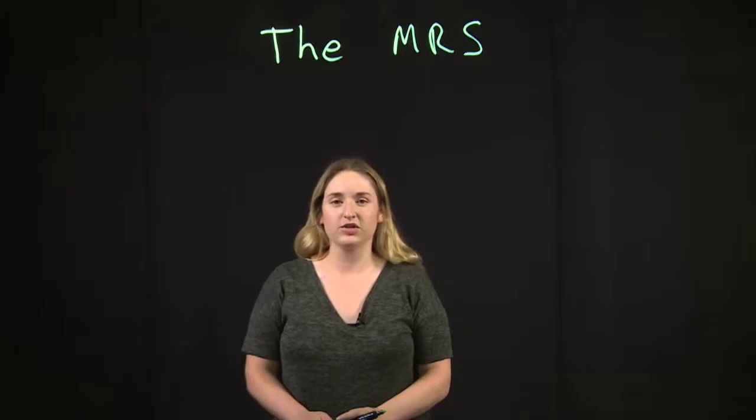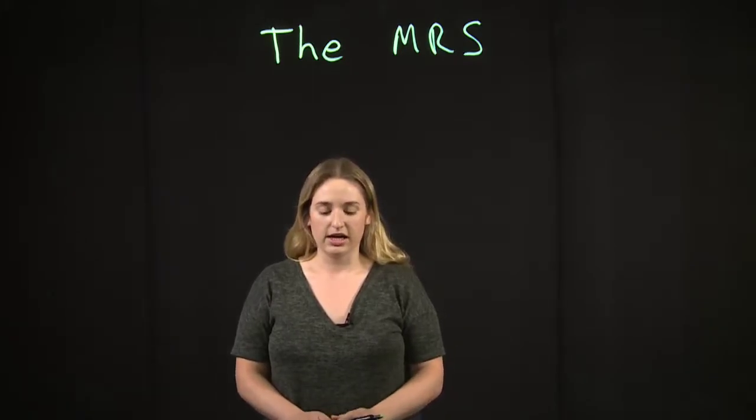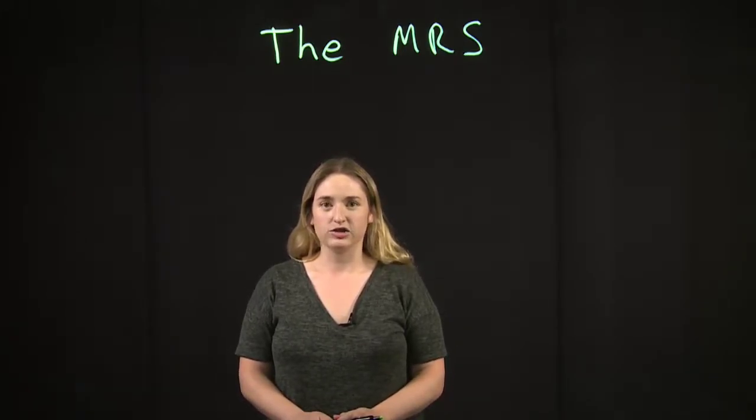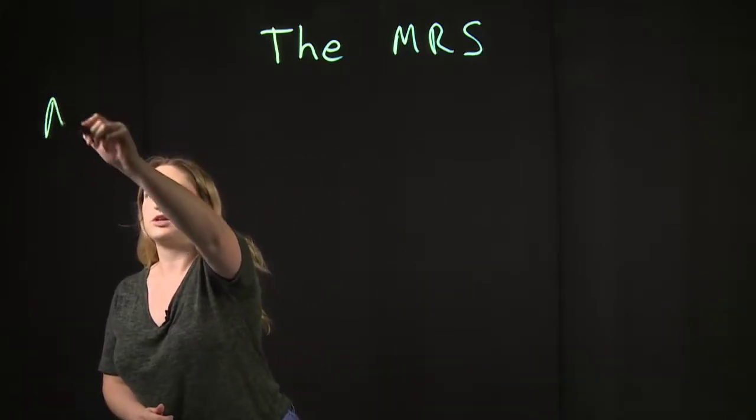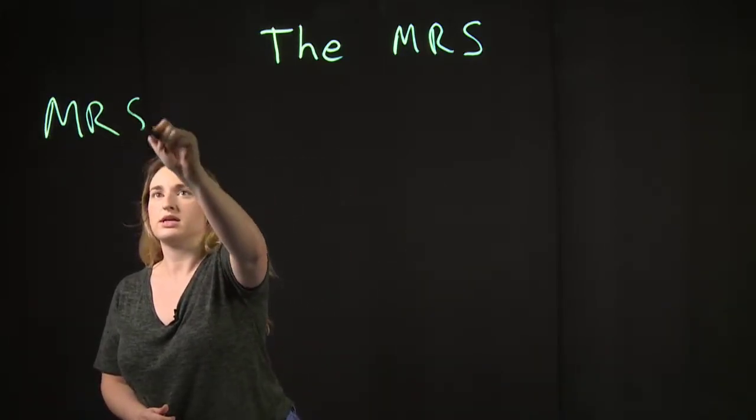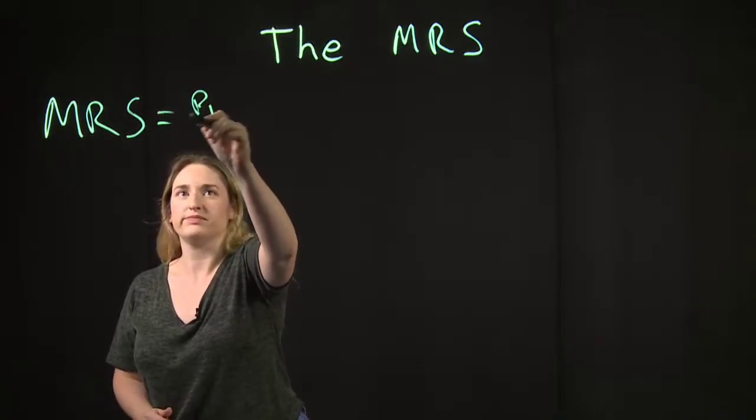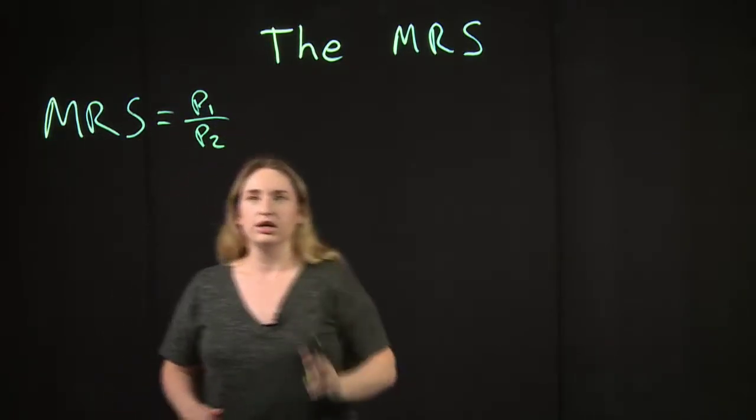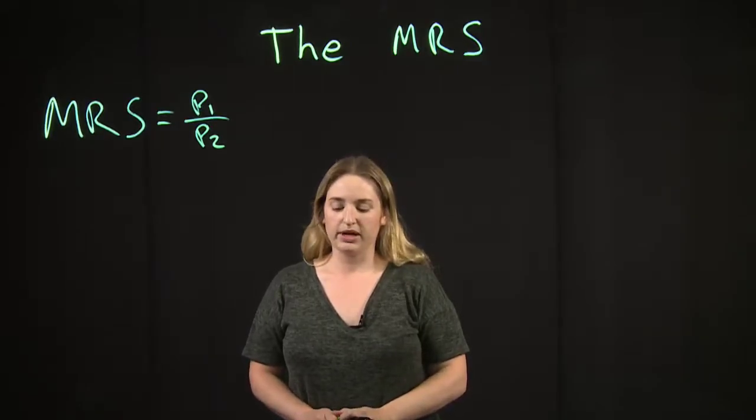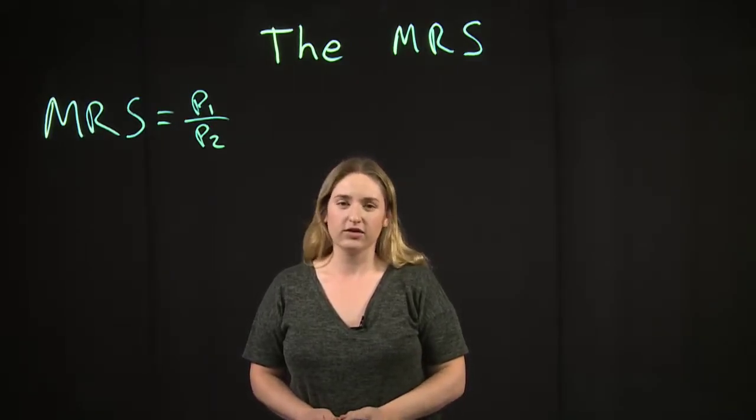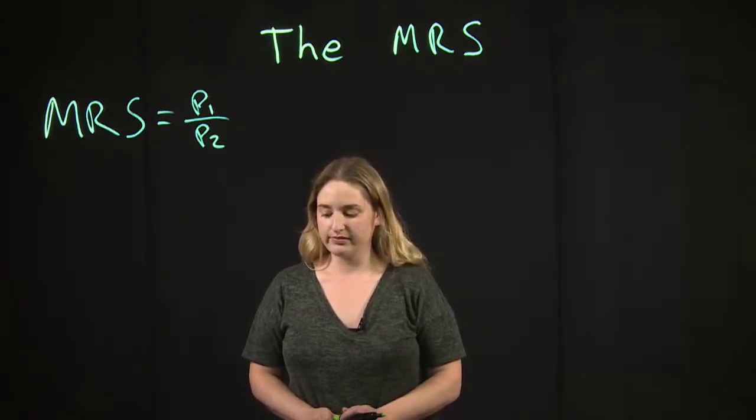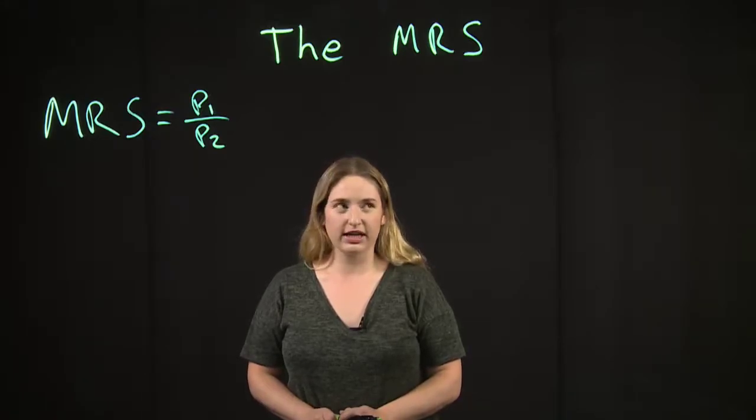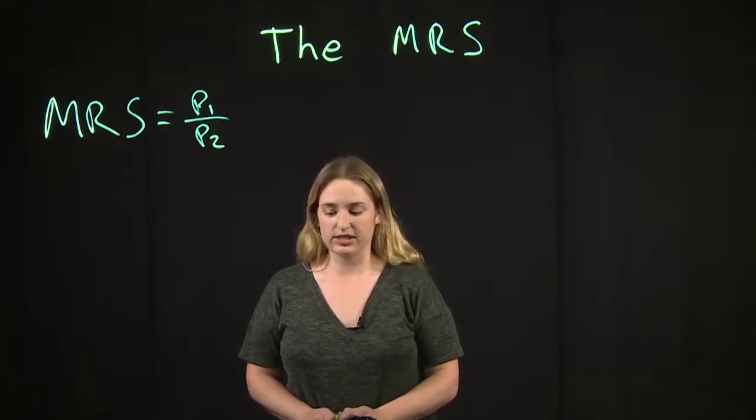So this is something you've been seeing all quarter. It's a tool you've been using a lot, so typically the way it works is that you set the MRS equal to some sort of price ratio. This tool is called Gossen's Second Law but you may not have heard that before and it's not really important that you know what it's called. What's most important is that you know when you can and cannot use it. So there are three different cases for when you can and can't use it.